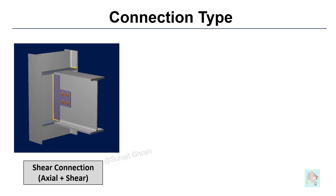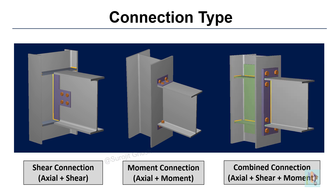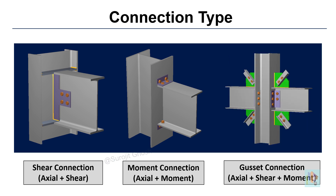In RAM connection, we can assign three types of connection: shear connection, where only axial force and uniaxial shear force is considered; moment connection, designed with axial force and end moment; and combined connection, where axial force, uniaxial shear and moment are all considered for design. Cassette connection is also a combined connection with additional axial force considered from the bracing.